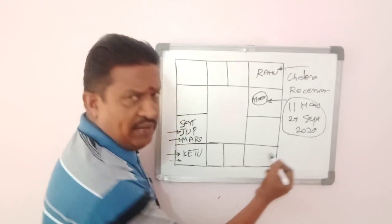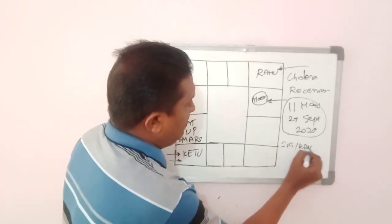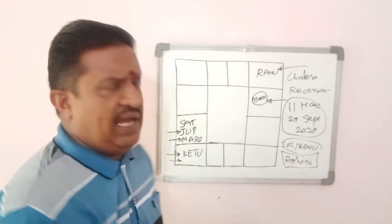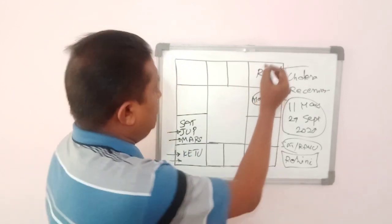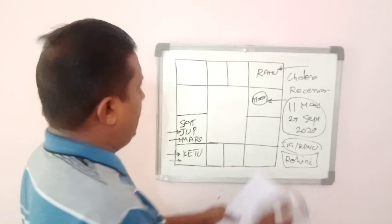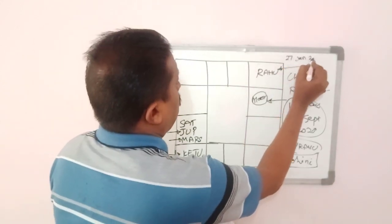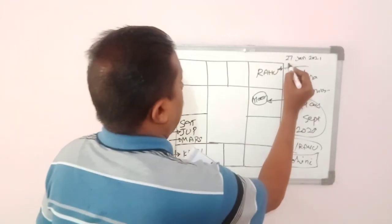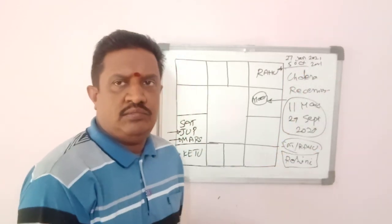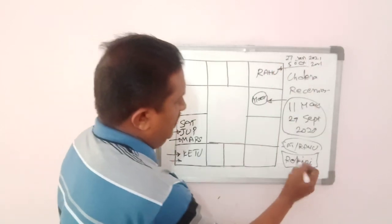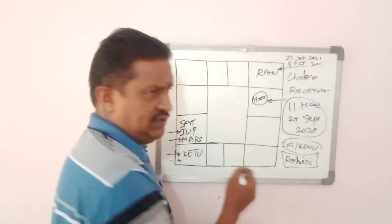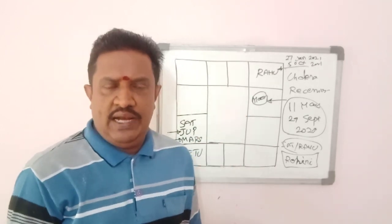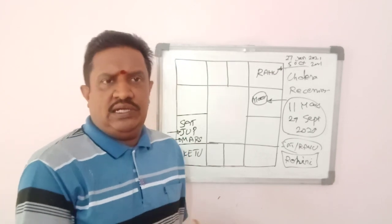One more rule in mundane astrology is that whenever Saturn or Rahu transit Rohini Nakshatra, there will be unrest in the public. This transit is happening from 27th January 2021 till 5th October 2021. But it may not be as severe as the situation is now. Still, we should be prepared to face this pandemic and take appropriate measures at least till October or November of this year.